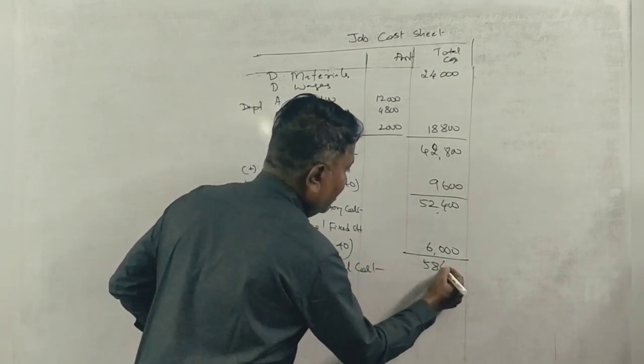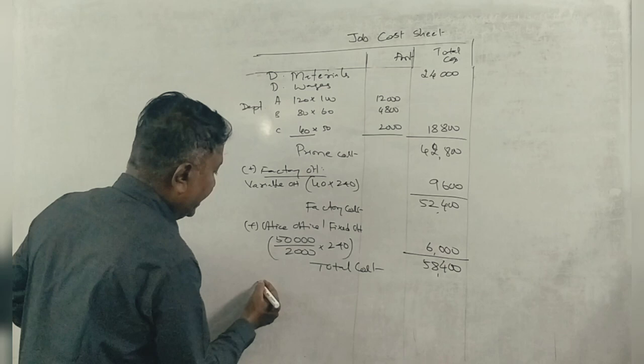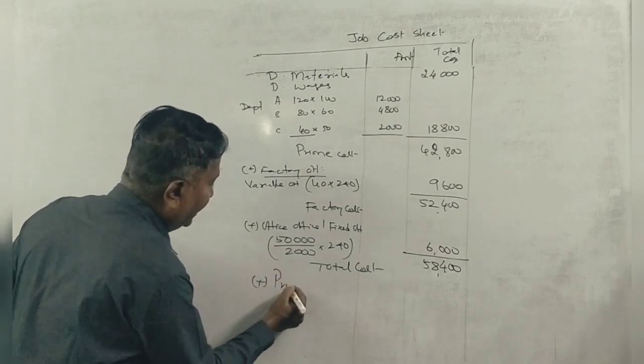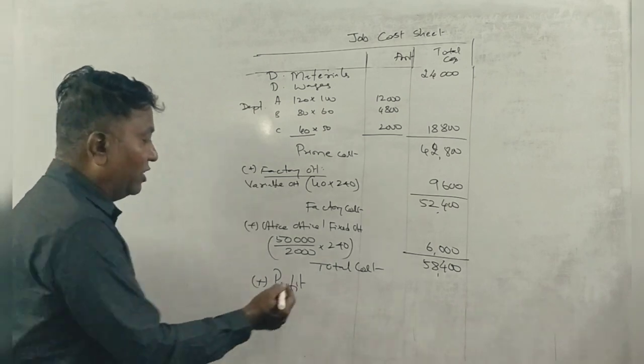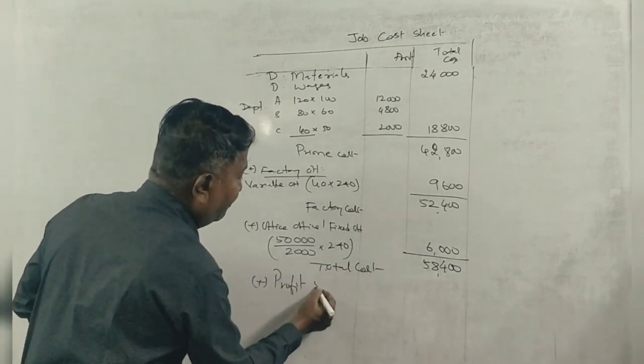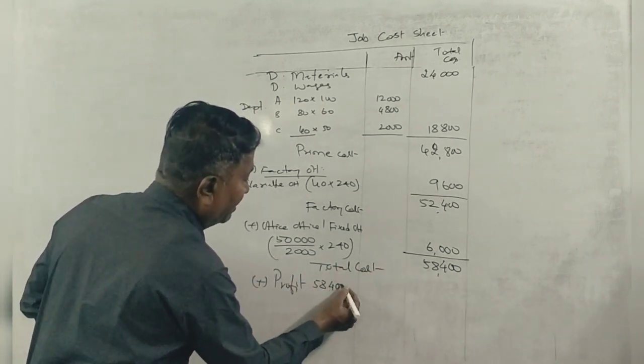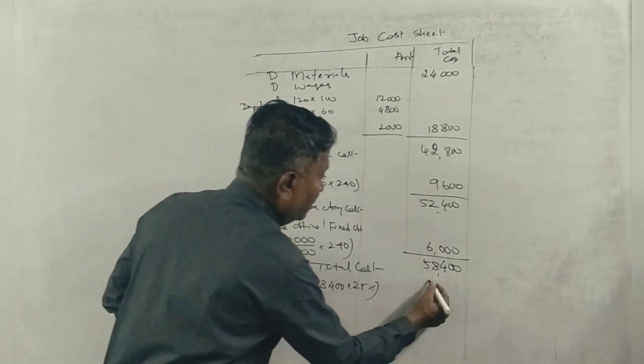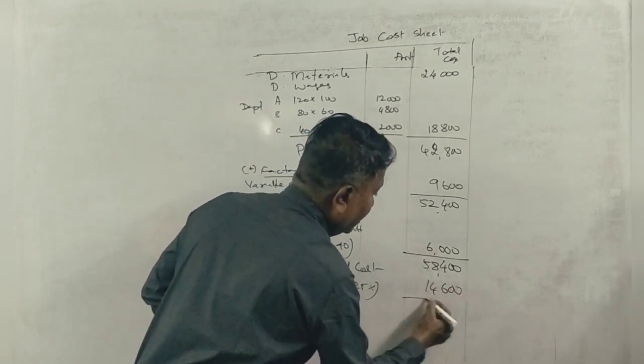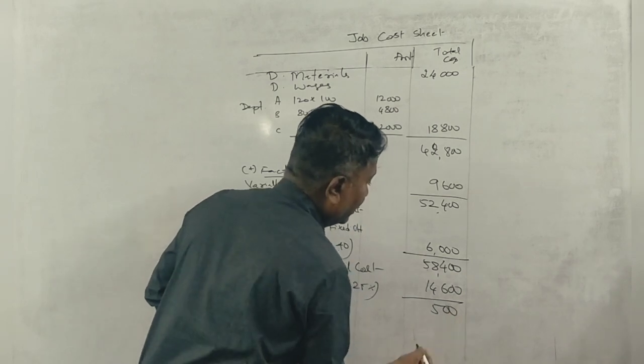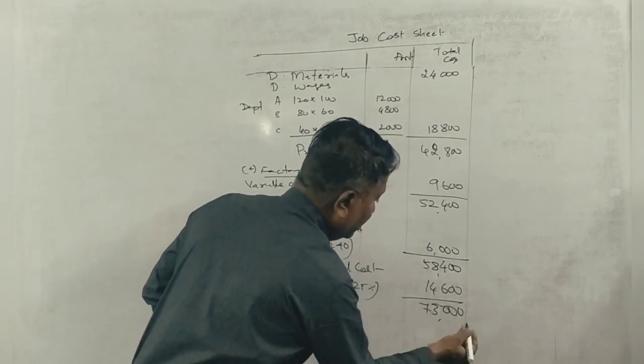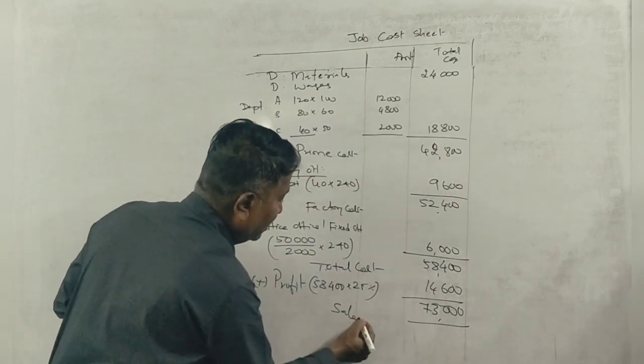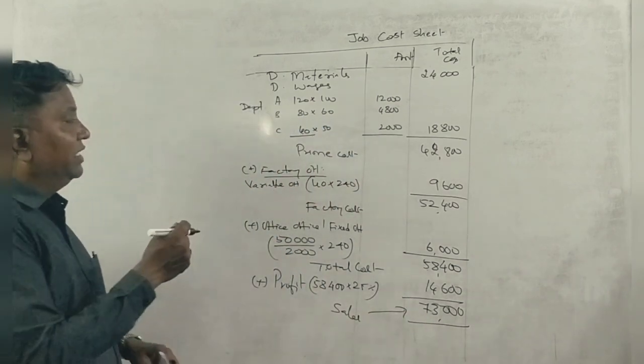Now profit: 25% profit on total cost. ₹58,400 at 25% gives ₹14,600 profit. So selling price is ₹73,000.